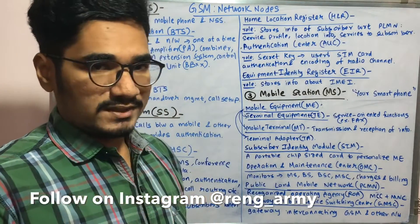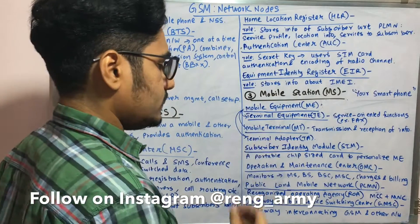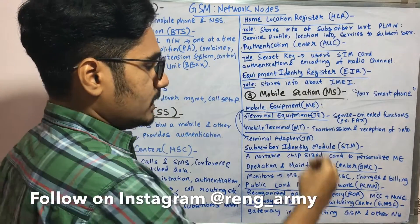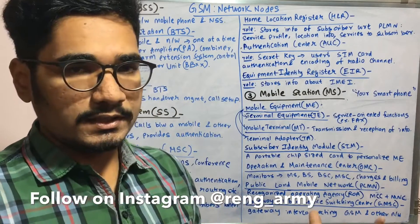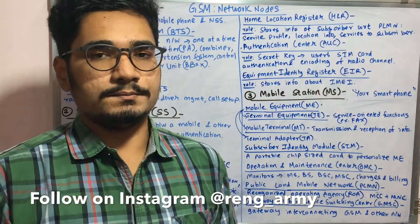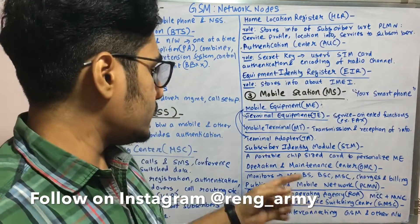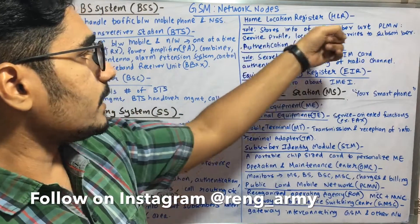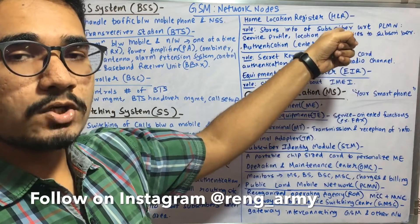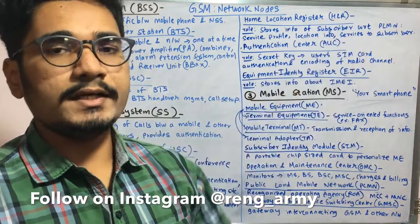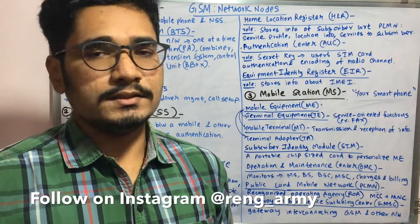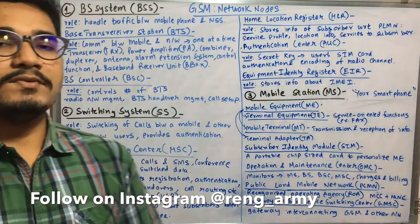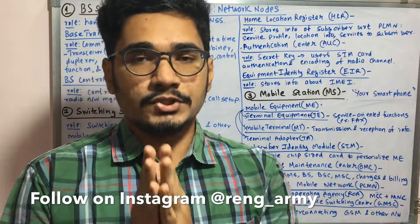Finally, the GMSC — Gateway Mobile Service Switching Center — is a gateway used for interconnecting the GSM network with other networks. Whenever a call comes into the GSM system, it is first routed to the GMSC, which then queries the HLR to find which part of the GSM network is being called, and then forwards the call and performs the switching accordingly.